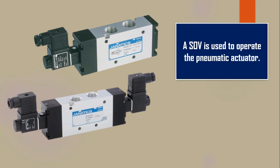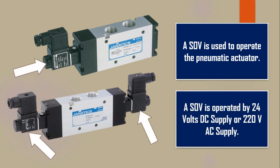A SOV — solenoid valve — is used to operate the pneumatic actuator. That means a solenoid valve is used to provide the signal to the pneumatic actuator. Here solenoid valves are shown in the picture. A SOV is operated by 24V DC supply or 220V AC supply. The supply is given to the solenoid coil, and here solenoid coils are shown by these white arrows.